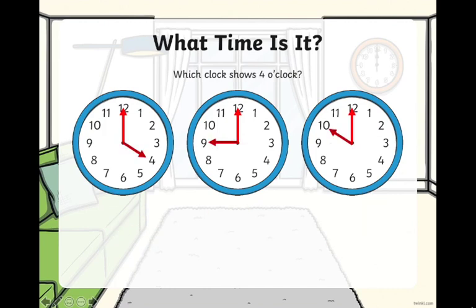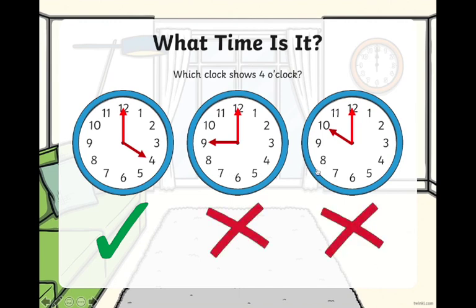Which clock here shows 4 o'clock? Remember, the minute hand is pointing at the 12 when it is o'clock, so all of these are o'clocks. But which one is 4 o'clock? If you guessed this one, you would be correct, and these two are wrong.